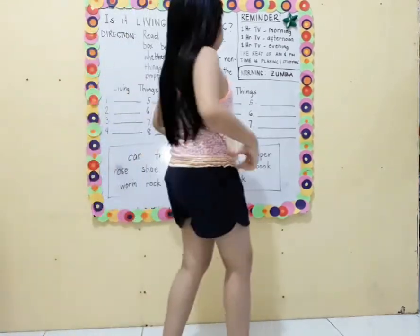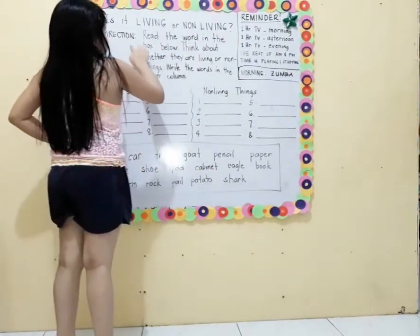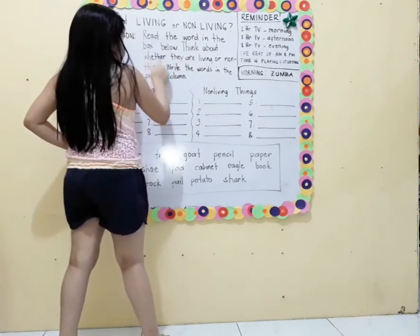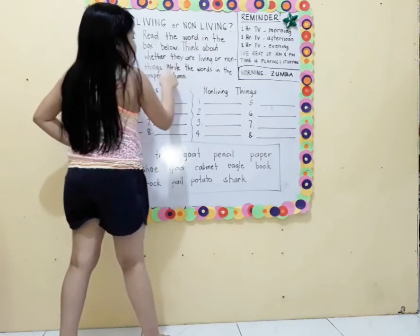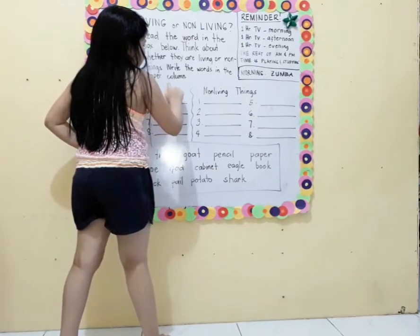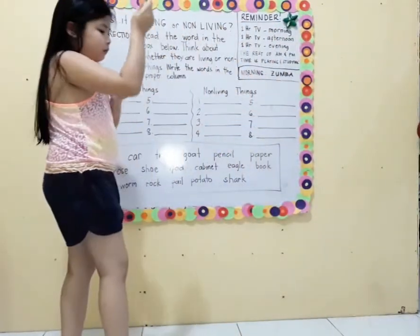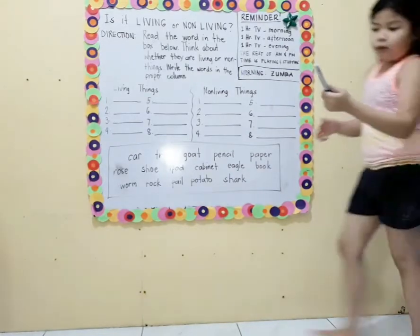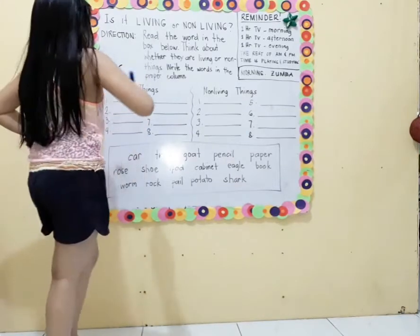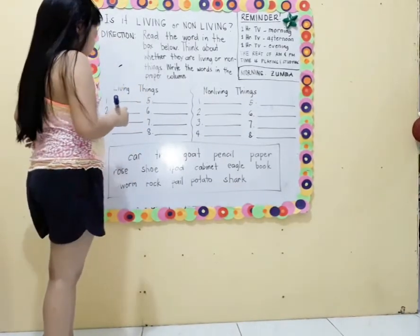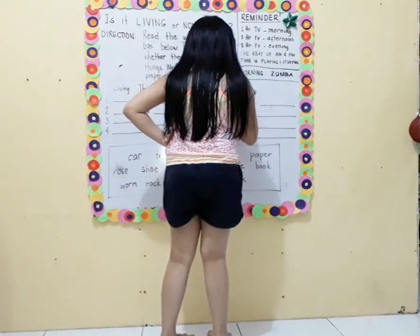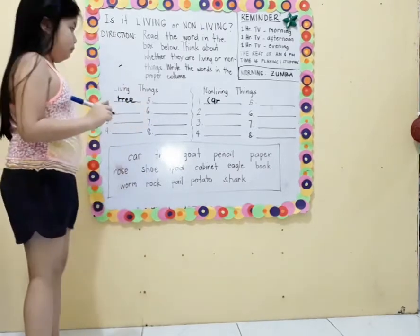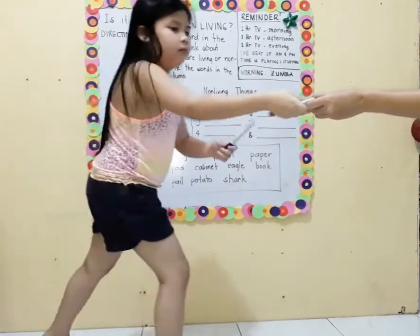Okay, is it living or non-living things? Read first the direction. Direction: Read the word in the box below. Think about whether they are living or non-living things. Write the words in the proper column. On the left side you will write the living things; on the right side, the non-living things. You will choose your answer from the box below. We're going to use a marker for this. The first one in the box is car — is it living or non-living? Non-living things. Next: tree. Next: gold.